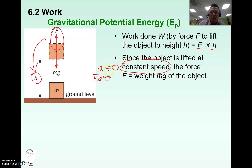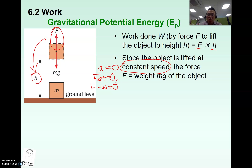Since the object is lifted at constant speed, acceleration is zero. By Newton's law, F_net equals ma, and since a is zero, F_net equals zero. The component equation is: force applied minus weight equals zero. If you are still not sure about Newton's law, refer to the video on Chapter 3 dynamics — I have a video on how to use Newton's law effectively.